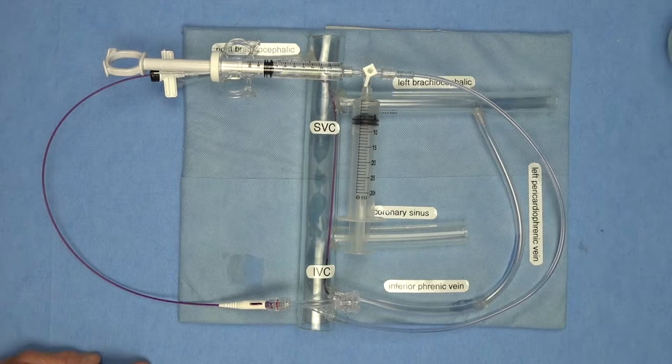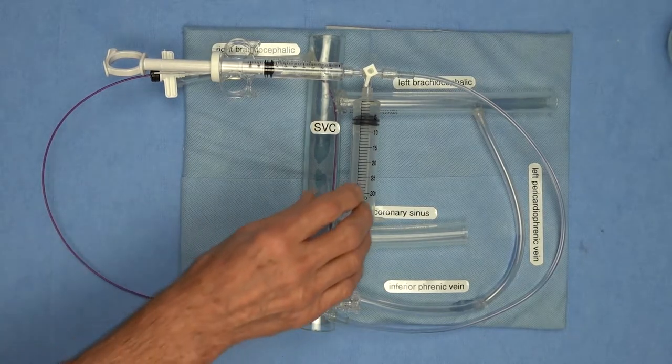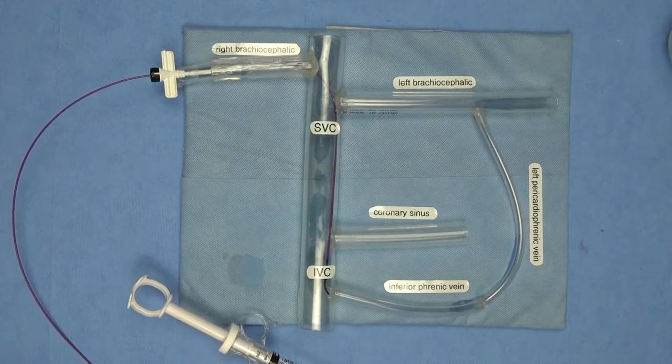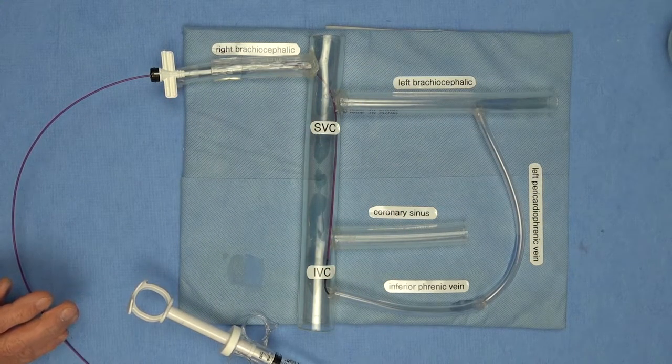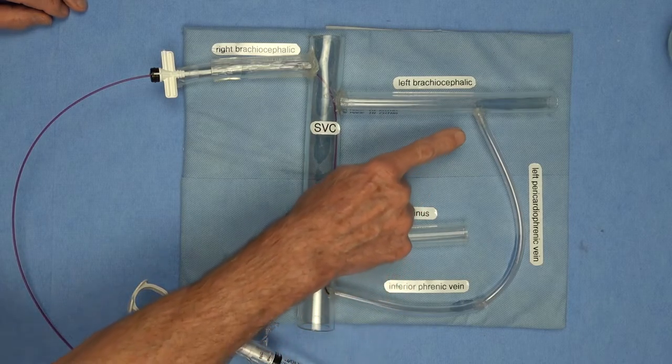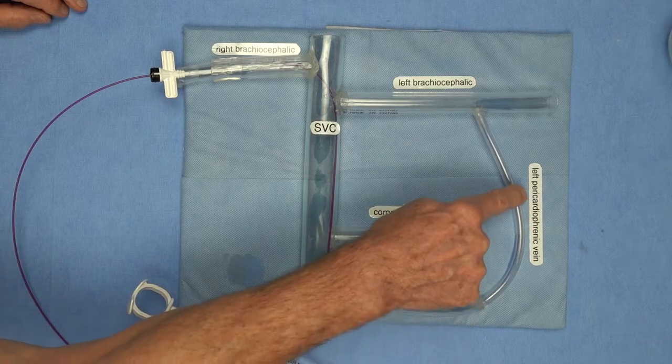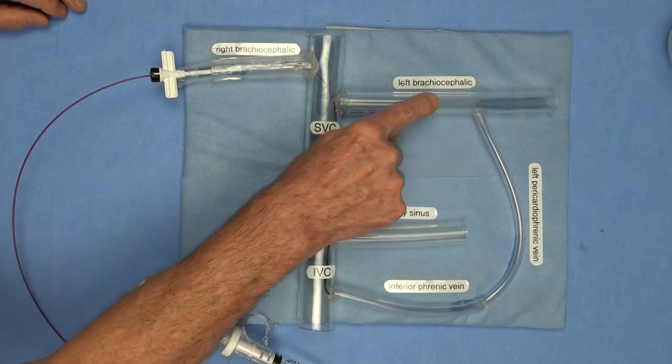Those of you who are beginning on the respicardia implant adventure, here's a couple more tips. One of them is if you can't find where the left pericardiophrenic vein enters the left brachiocephalic vein.